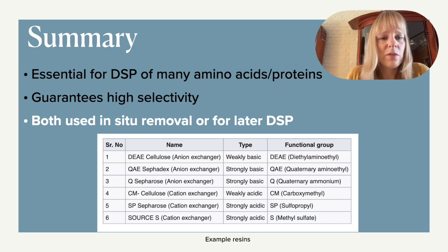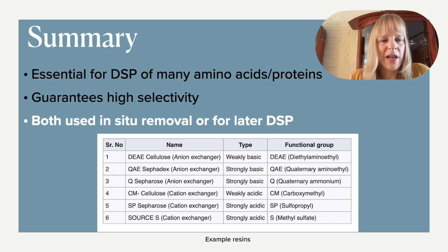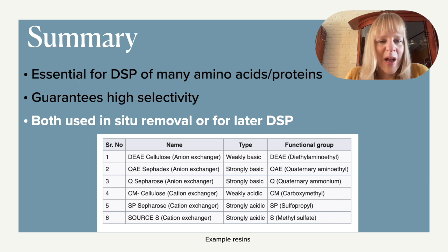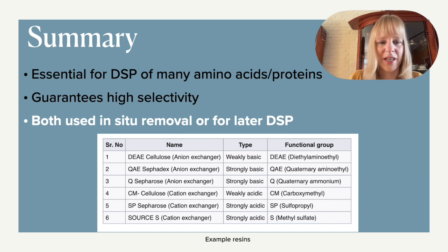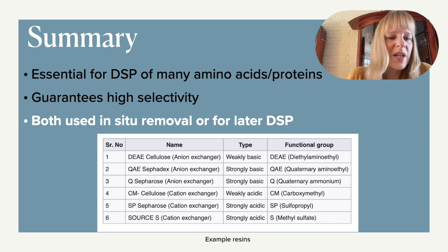We've seen an example of in-situ removal, where you take something out, further purify your product, and at the same time boost the yield within your reactor — returning unreacted material back in. You can also use it at the end, after cells have been removed, as part of a train of different downstream processes. There are many different resins you can use; I've given examples of the most common ones, their names, the difference between strongly and weakly acidic or basic resins and their advantages, and the functional groups they use. There are obviously many more, but this gives a flavor of what's commonly used in industry.